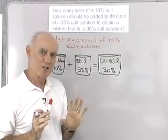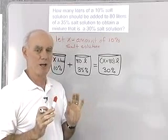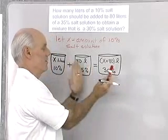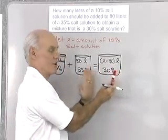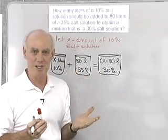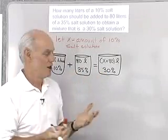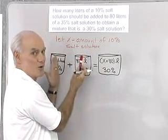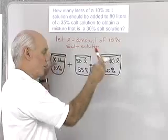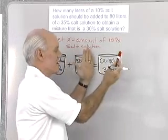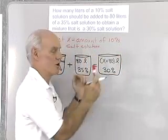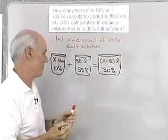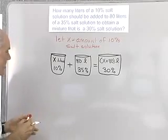We solve this problem by looking at the amount of salt on the left side and the amount of salt on the right side, because they have to be equal. Whatever amount of salt is in these two solutions, when we pour them together, that has to equal the total amount of salt on the other side. So let's write an equation from that.